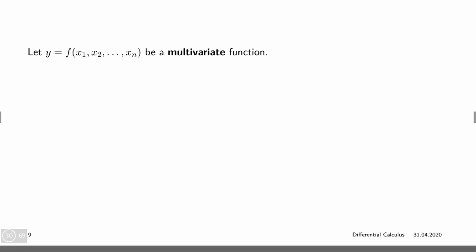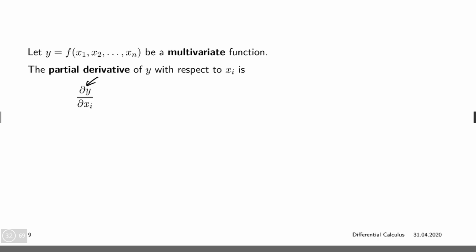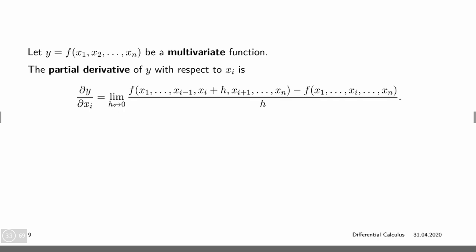We have seen how to take derivatives of univariate functions — functions that take a single input and produce a single output. Now, for multivariate functions that take n values as inputs, x1 through xn, we call the derivative with respect to a single one of these the partial derivative with respect to xi, where i is the index of the variable we want to differentiate with respect to. That equals partial y over partial xi, and we introduce this special partial derivative symbol.